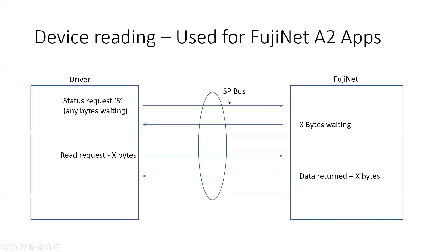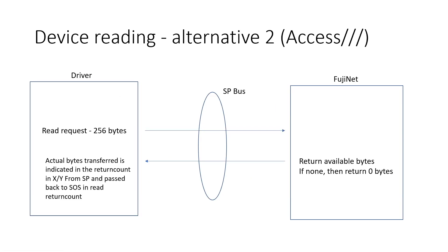There are a couple of scenarios I found when using FujiNet Apple 2 apps. When reading data from a device, you send a status request asking if there are any bytes waiting. You either get zero bytes or X bytes, then read them. What I found with some Apple 3 programs is they'll do a read request for a chunk of bytes, and if none are available you just get zero bytes returned. When there are some, the actual bytes transferred is indicated back in the SOS call — so it polls via read, no bytes, read, no bytes, then gets a chunk. I had to update FujiNet to handle this case.